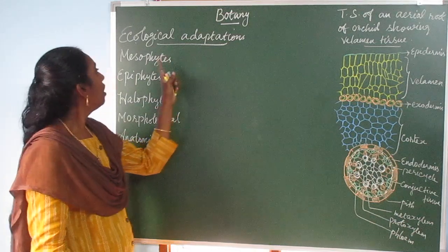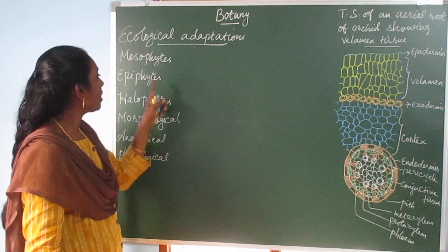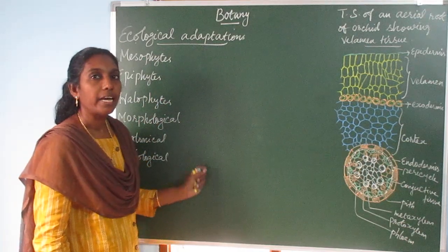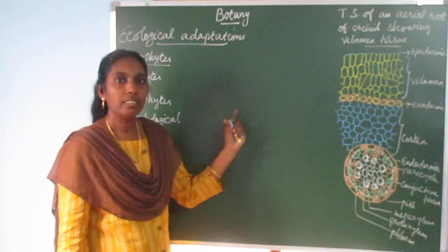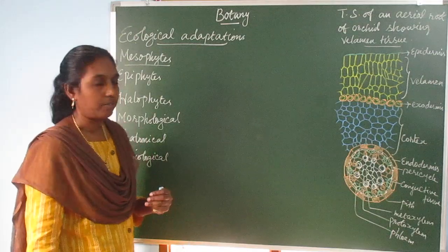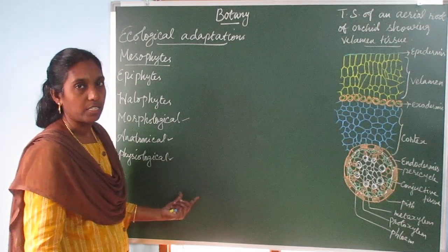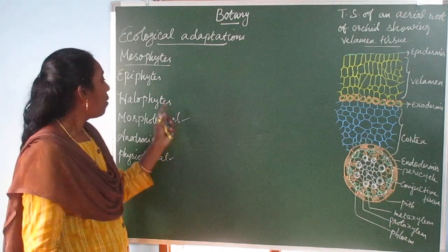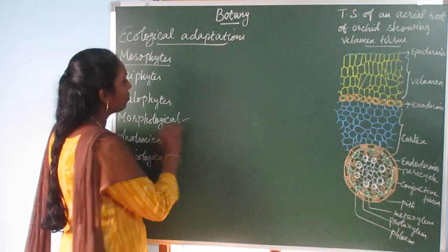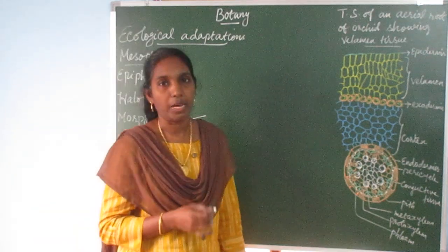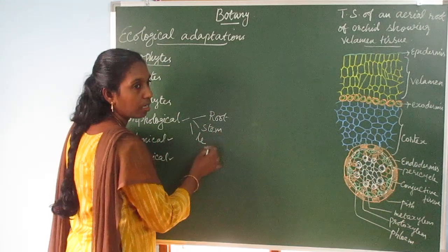Today we are going to learn the ecological adaptations seen in Mesophytes, Epiphytes, and Halophytes. Under each category, there are three different adaptations: morphological adaptations, anatomical adaptations, and physiological adaptations. Morphological adaptations include the morphology of a plant — root, stem, and leaf.